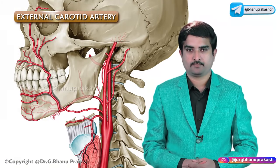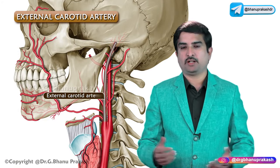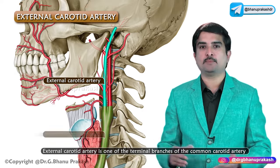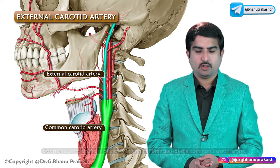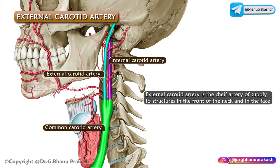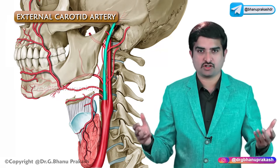The external carotid artery is one of the terminal branches of the common carotid artery. In general, it lies anterior to the internal carotid artery and it is a chief artery of supply to the structures in front of the neck as well as in the face.